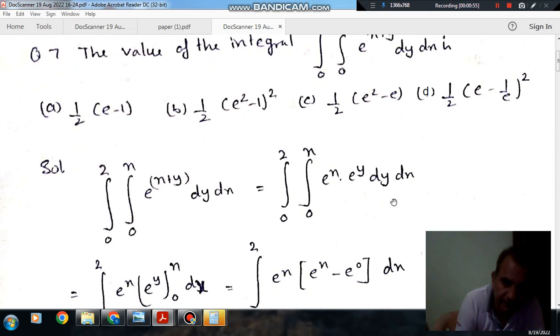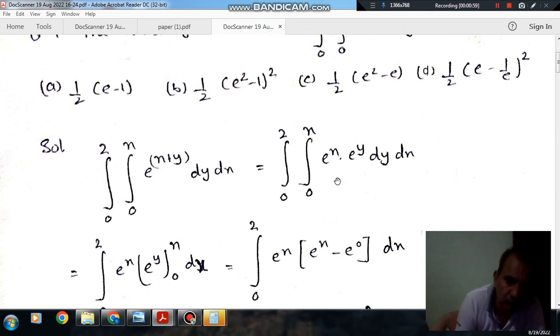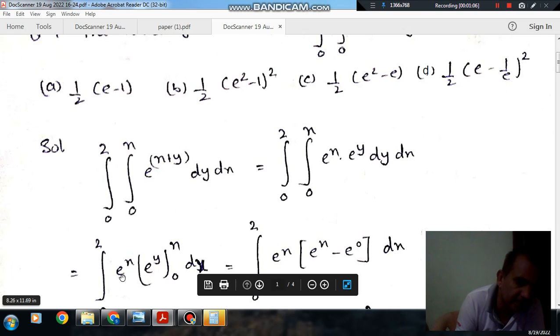Now, first integrating this part, e^y dy, and putting limit x to 0. So integration of e^y is e^y, and this is the constant quantity for e^y, so this will be written as is.